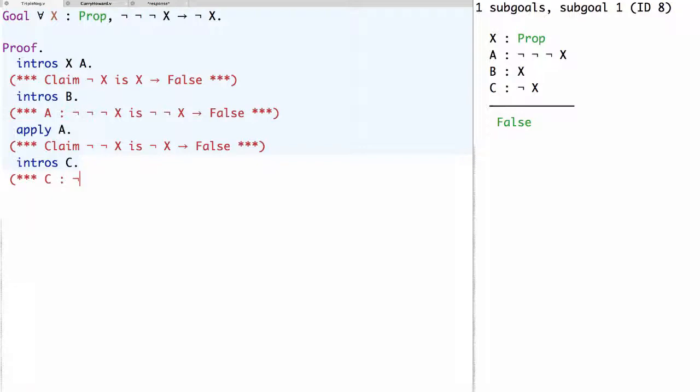So this new assumption of not x is up to definition the same as x implies false. So we can apply c and reduce the claim to proving x. And now we're done because, in fact, we do have x as an assumption, the assumption b, so we can finish the proof with exact b.